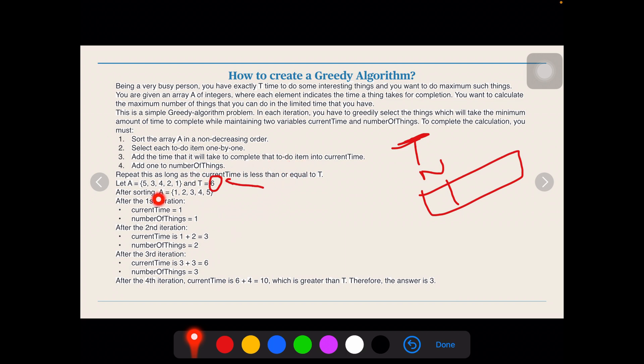See, clearly we can understand that we can sort the array in a non-decreasing order. We can sort it in 1, 2, 3, 4, 5 and check the summation until it is greater than or equal to 6. So, the current time is 1, number of things you have done is 1. The current time is 3, the number of things you have done is 2. Current time is 6, the number of things that you have done is 3. After the fourth iteration, the current time becomes greater than T. Therefore, the answer is 3.